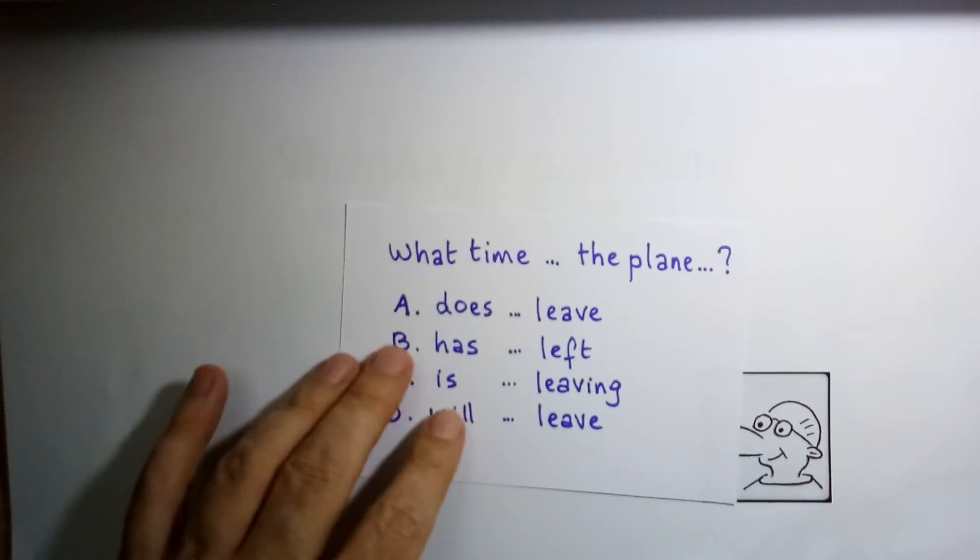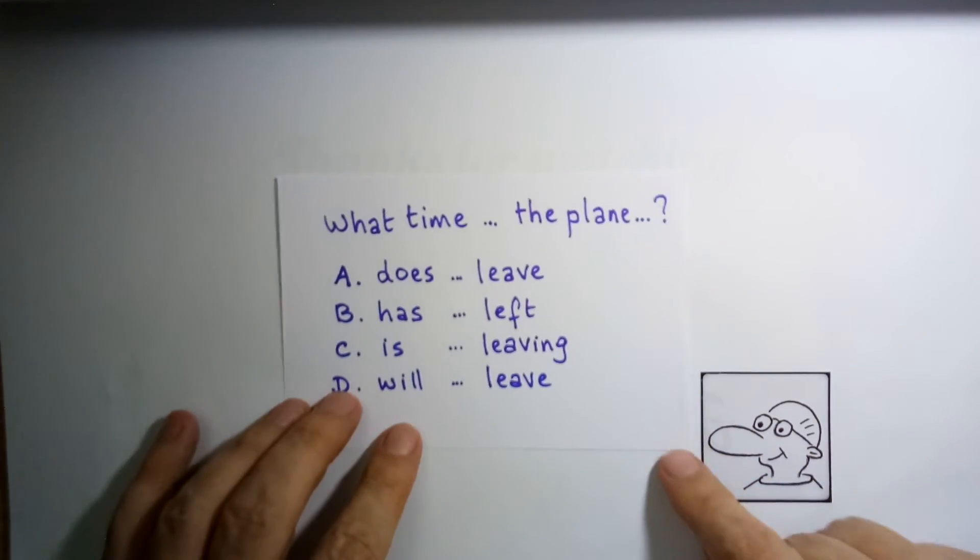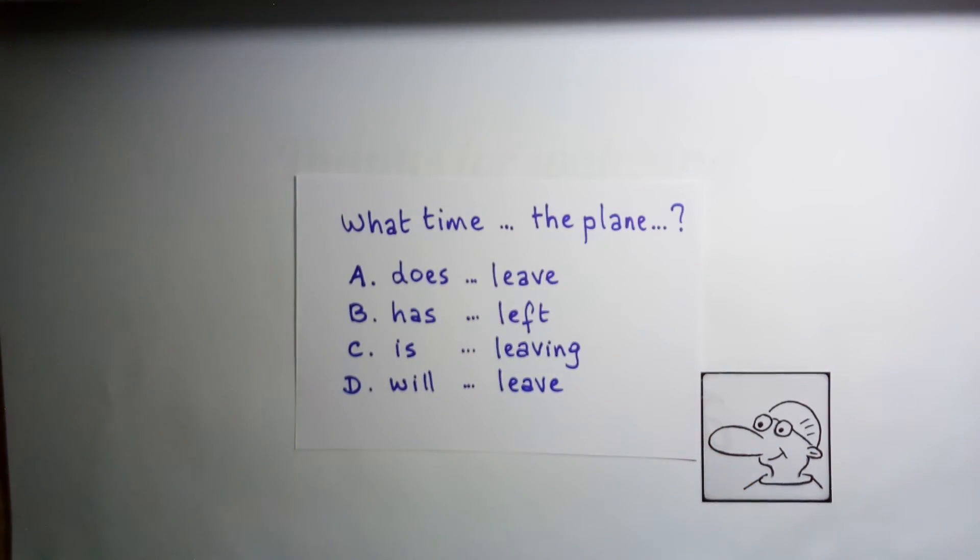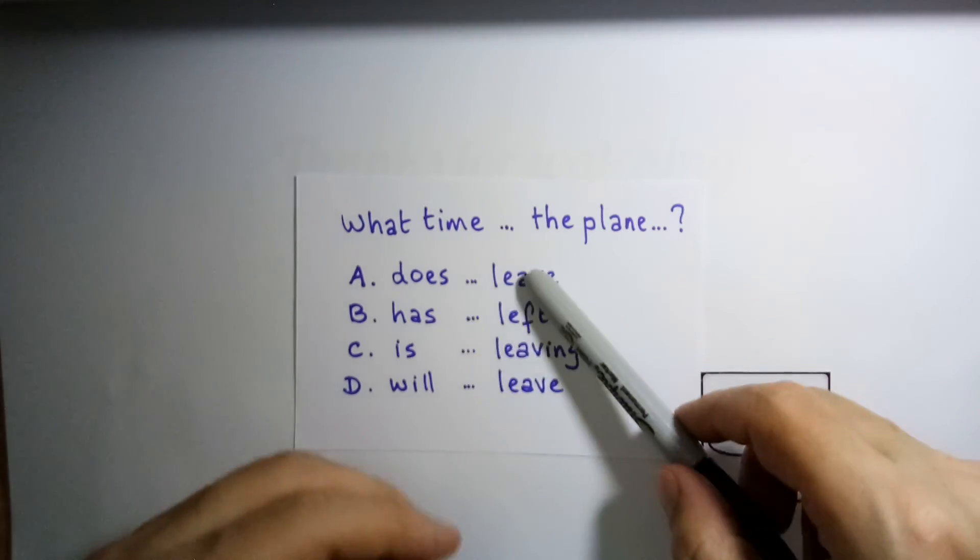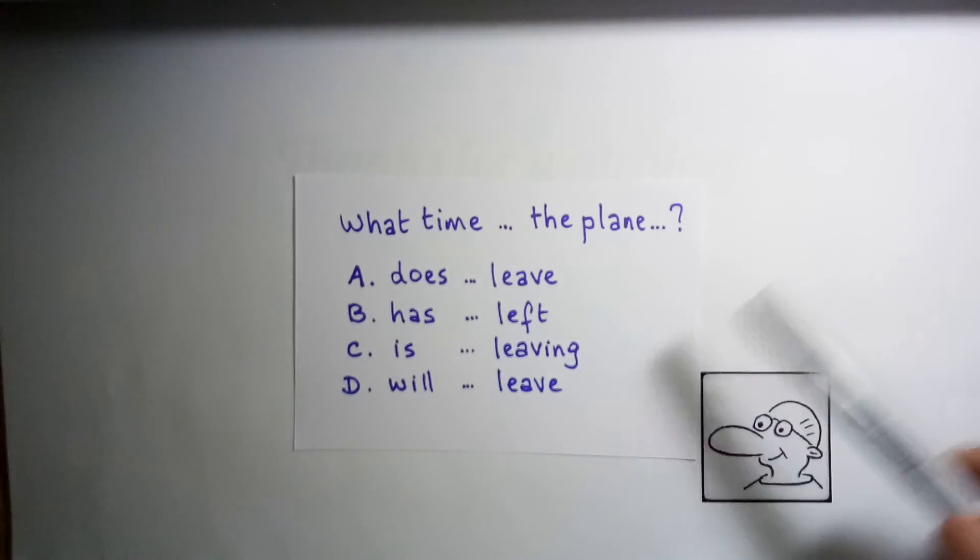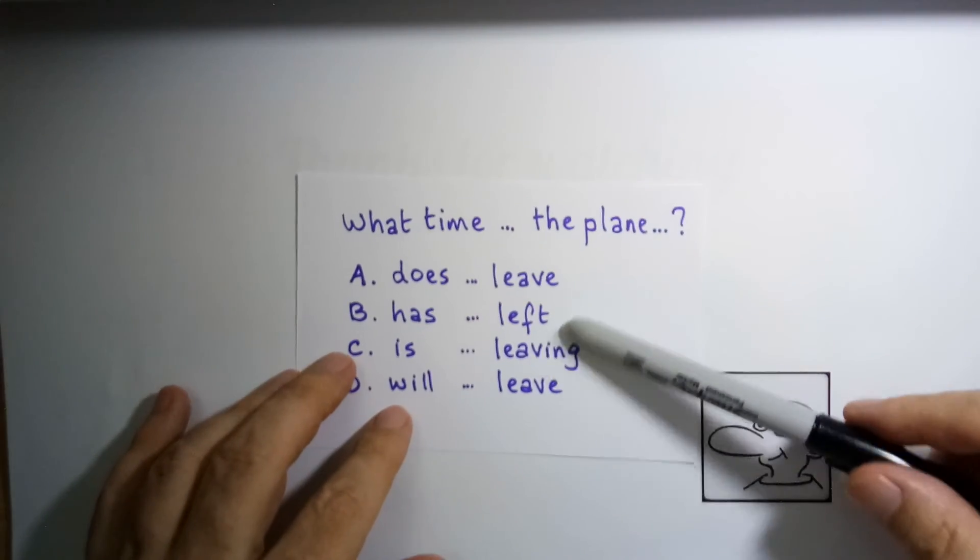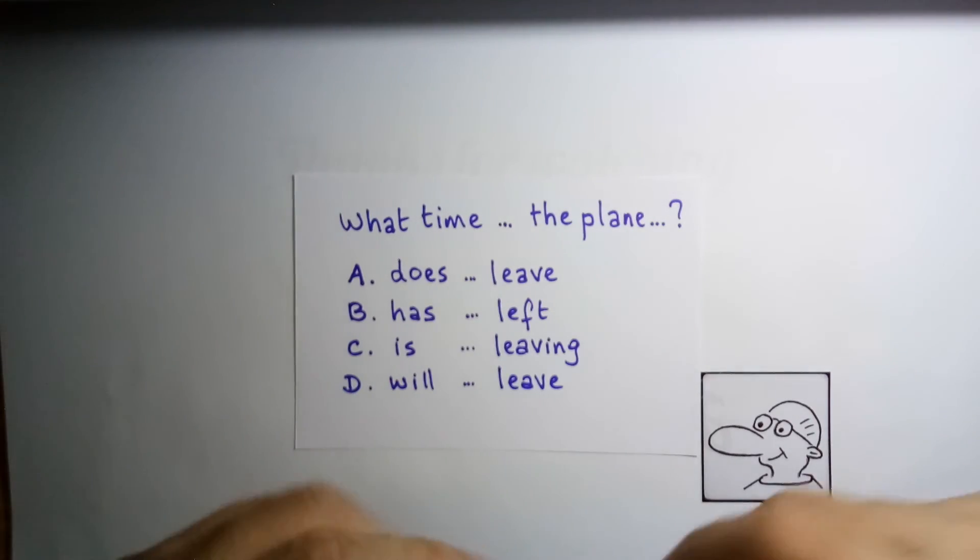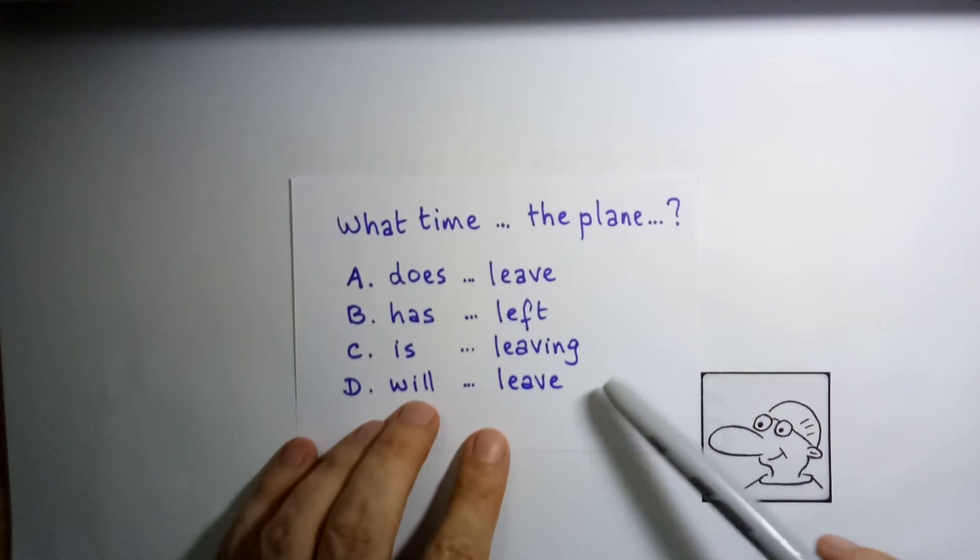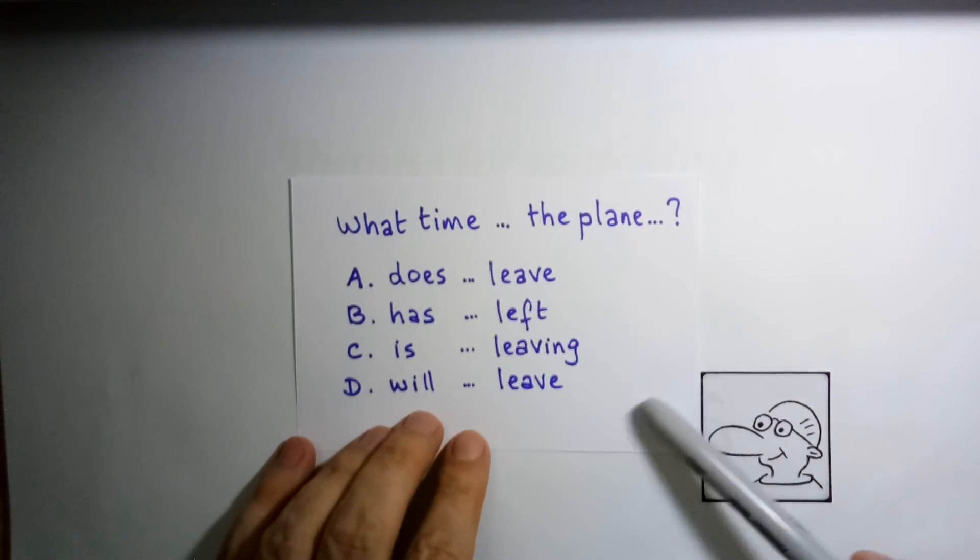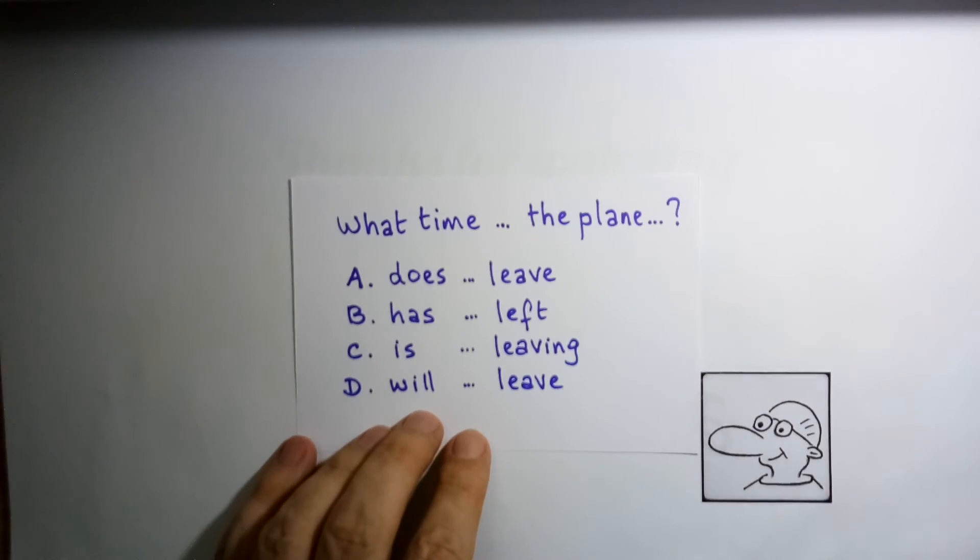Finally, the question of the day is a question about verb tenses. You're going on holiday, you're going away tomorrow and you're going by plane. A friend asks you, what time? The plane. You need to use the verb leave either in present simple, present perfect, present continuous or future simple. Let me know what you think the best answer is. There's only one really good answer.